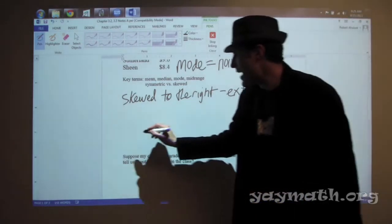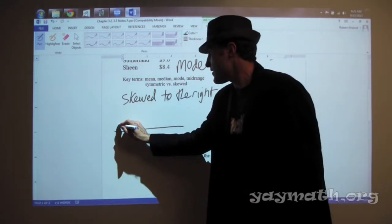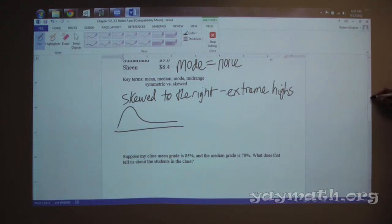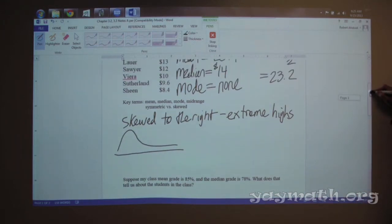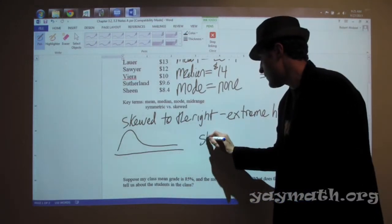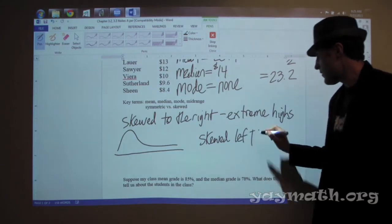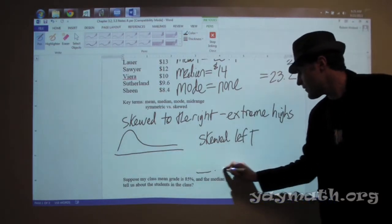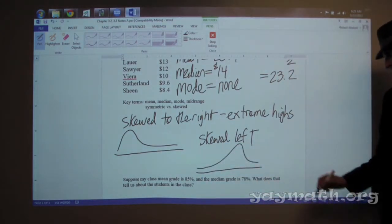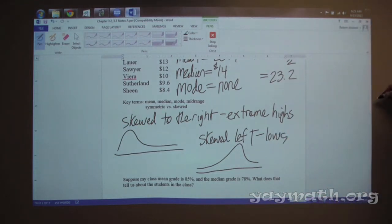So, that would be something like this. And I'll explain why this works. And then you have skewed to the left. And that would be here. That's extreme lows. And then we need a symmetric. That's important too.